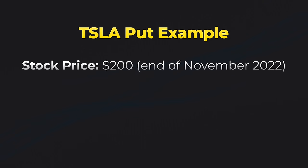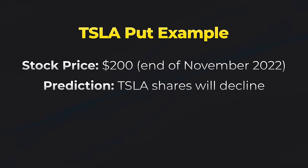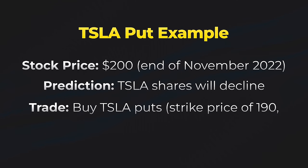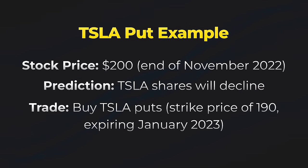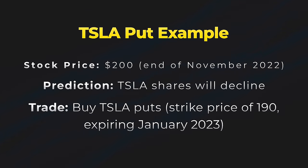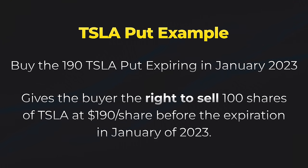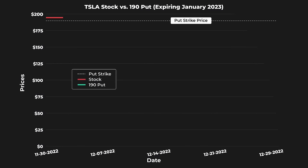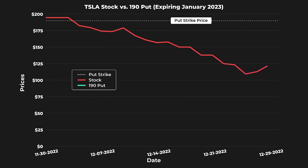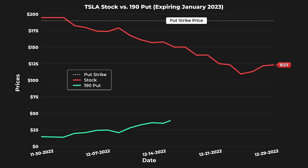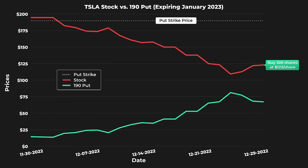Tesla's stock price traded near $200 at the end of November 2022. A trader expecting sharp price declines could have purchased put options on Tesla with a strike price of $190 expiring in mid-January 2023. The put gives the buyer the right but not the obligation to sell 100 shares of Tesla for $190 per share before the expiration date. As Tesla's share price dropped sharply from $195 to $123 in December 2022, the $190 strike put increased in value as the ability to sell shares for $190 became much more valuable. With the stock price at $123, traders could buy 100 shares for $123 and sell them at the strike price of $190 using their put options.